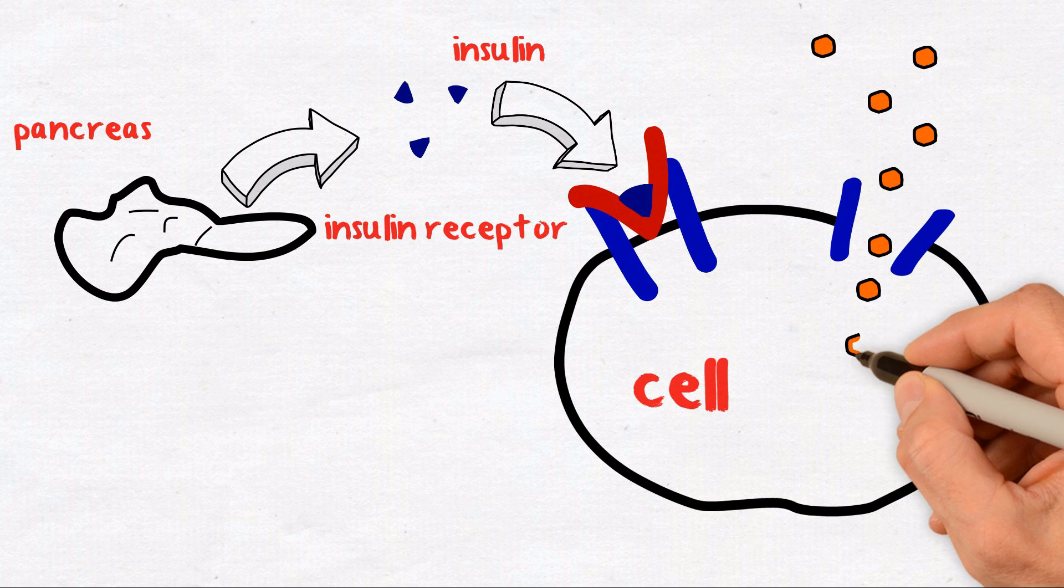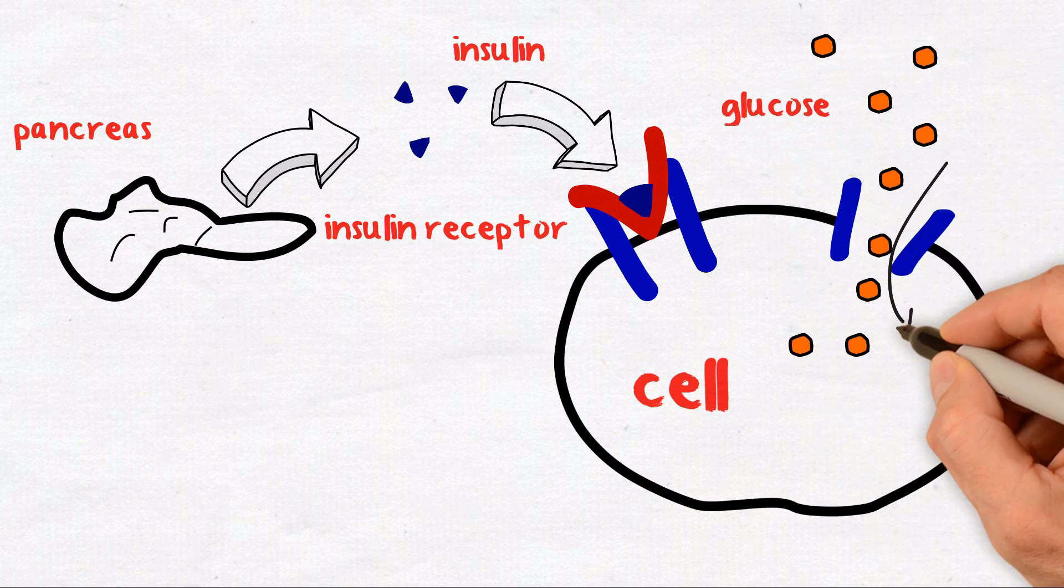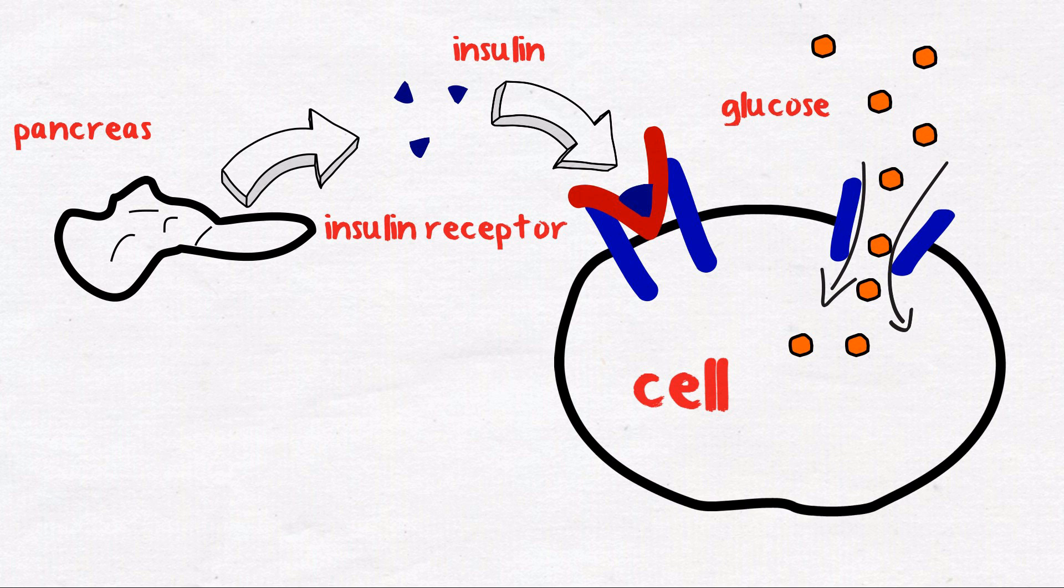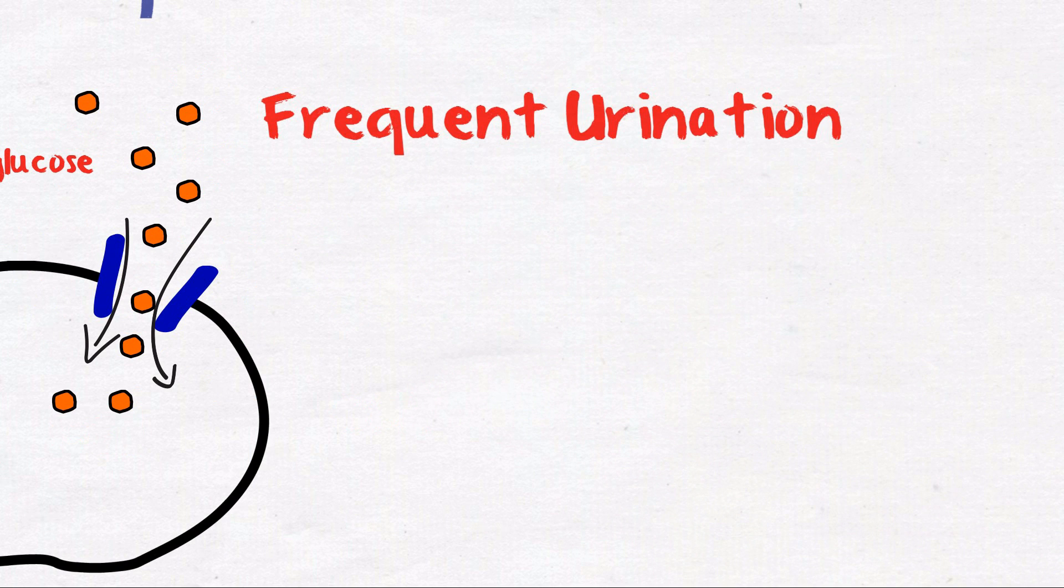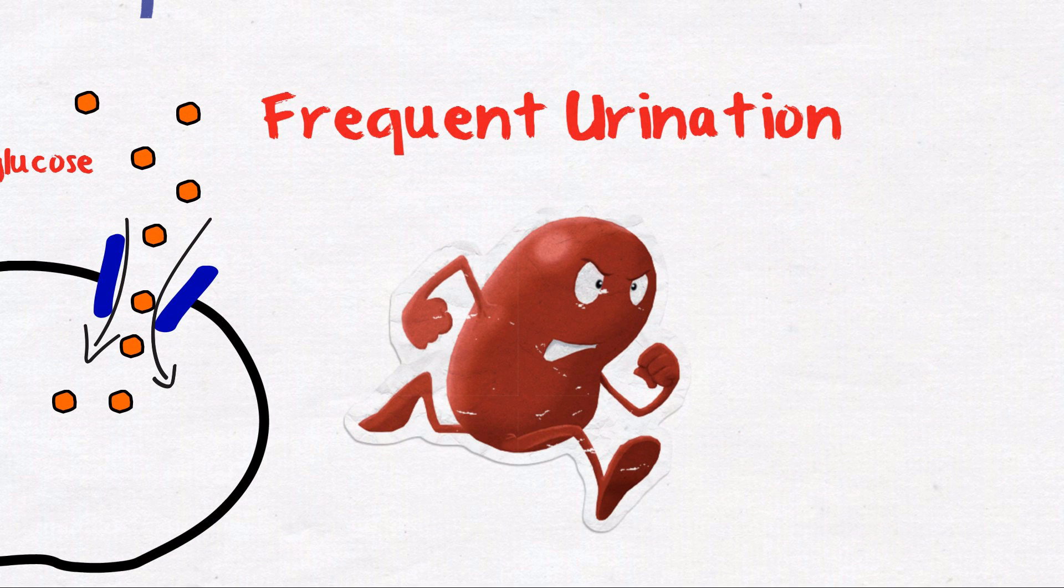Often there are no type 2 diabetes symptoms, or they may be mild and go unrecognized. Here's what to look for. Frequent urination: When there is excess glucose present in the blood, as with type 2 diabetes, the kidneys react by flushing it out of the blood into the urine.